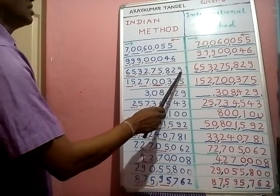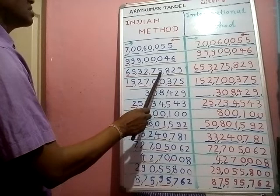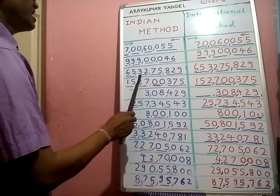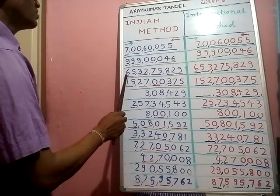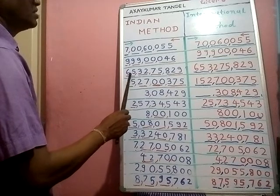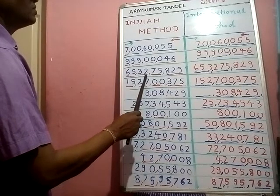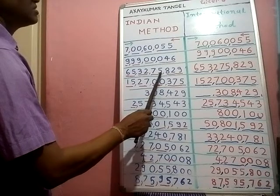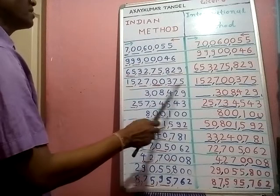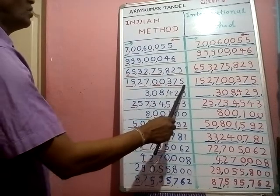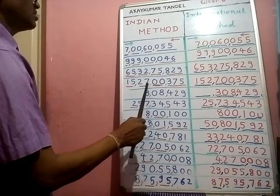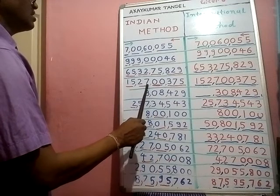Next one — ones, tens, hundreds, thousands, ten thousands, lakhs, ten lakhs, crores. We read: sixty-five crore thirty-two lakh seventy-five thousand eight hundred twenty-nine. Indian method. Next one — ones, tens, hundreds, thousands, ten thousands, lakhs, ten lakhs, crores.